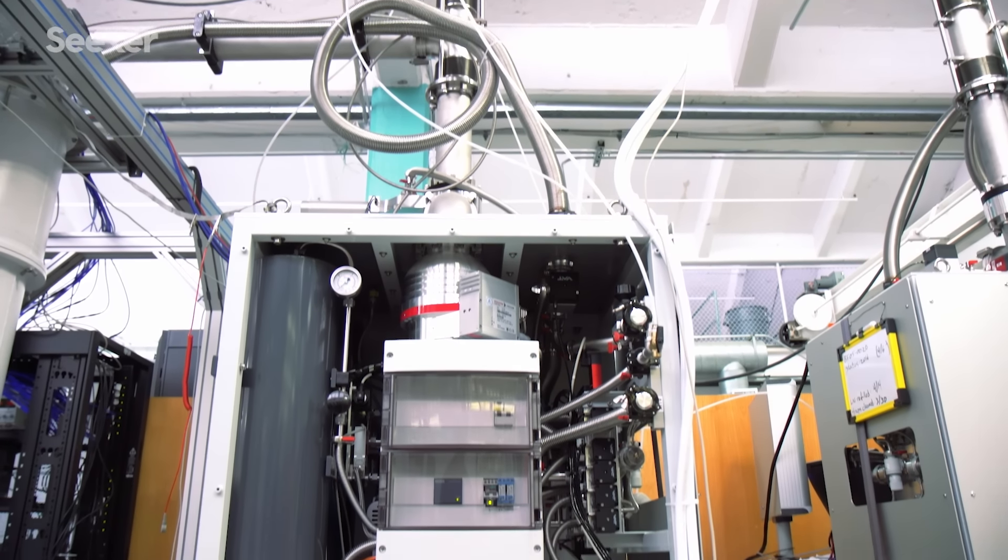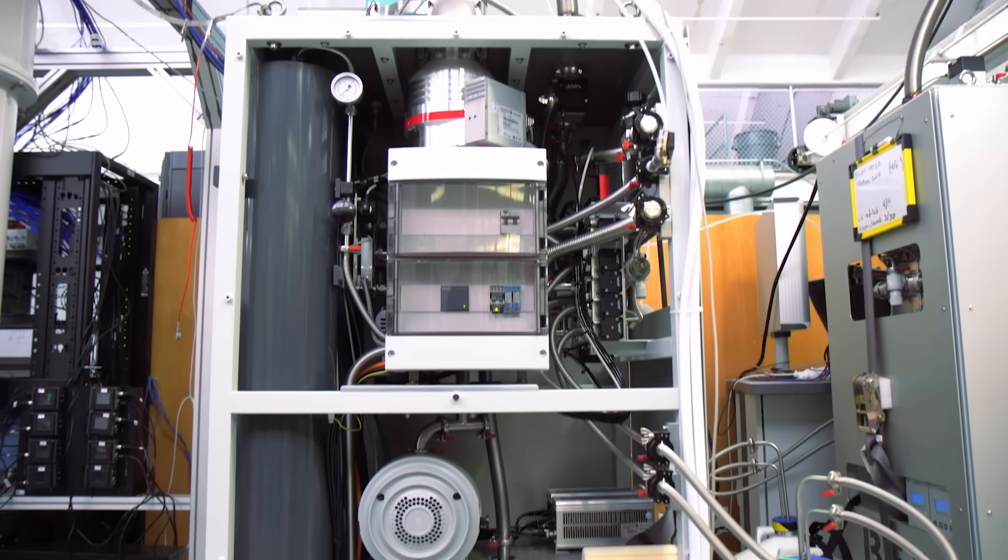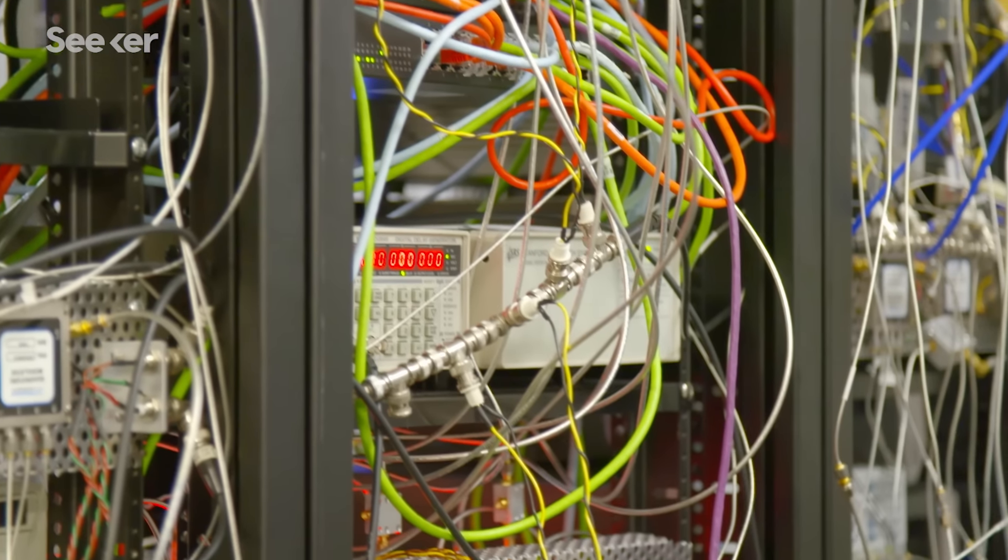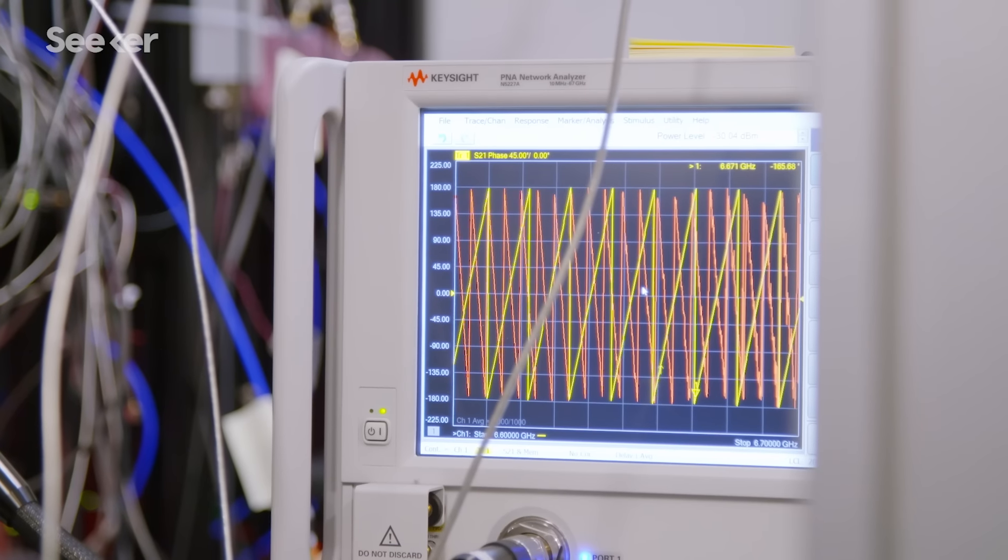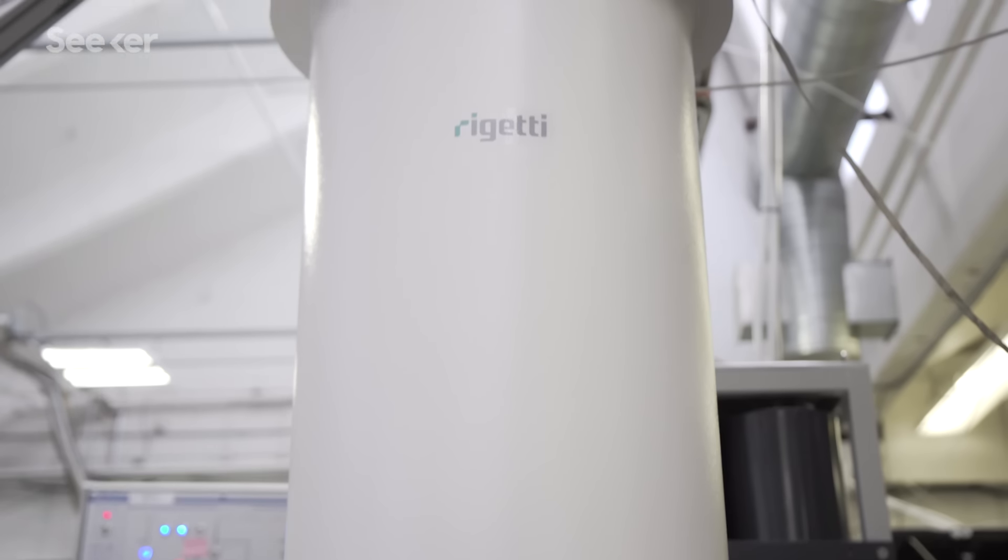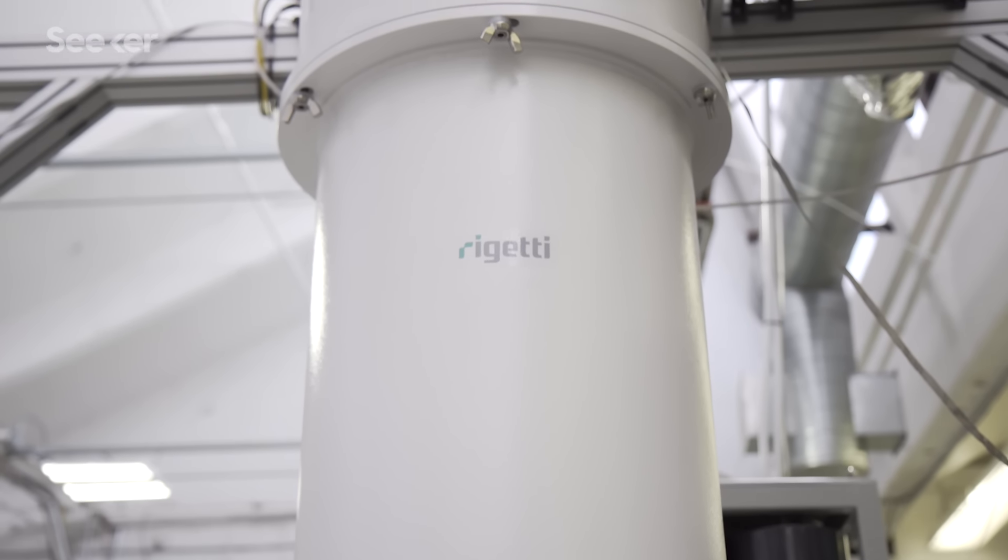Besides the refrigerator, there's an entire suite of hardware components and coaxial cables, attenuators, microwave amplifiers, circulators, a whole bevy of components that all need to function at low temperatures to enable our quantum processors.